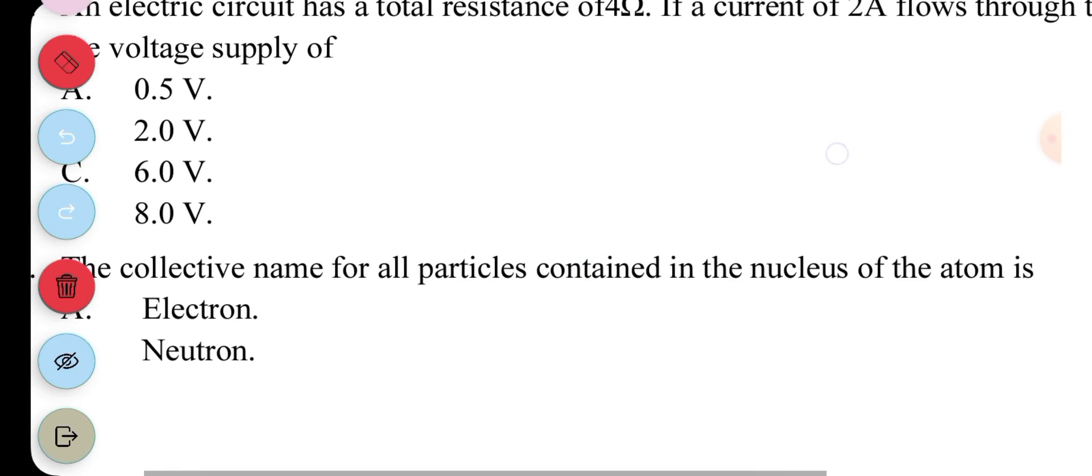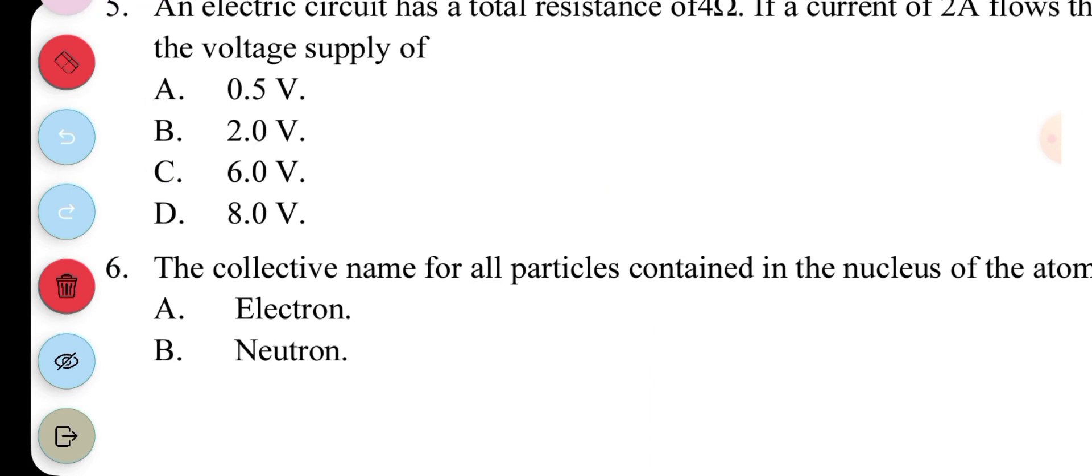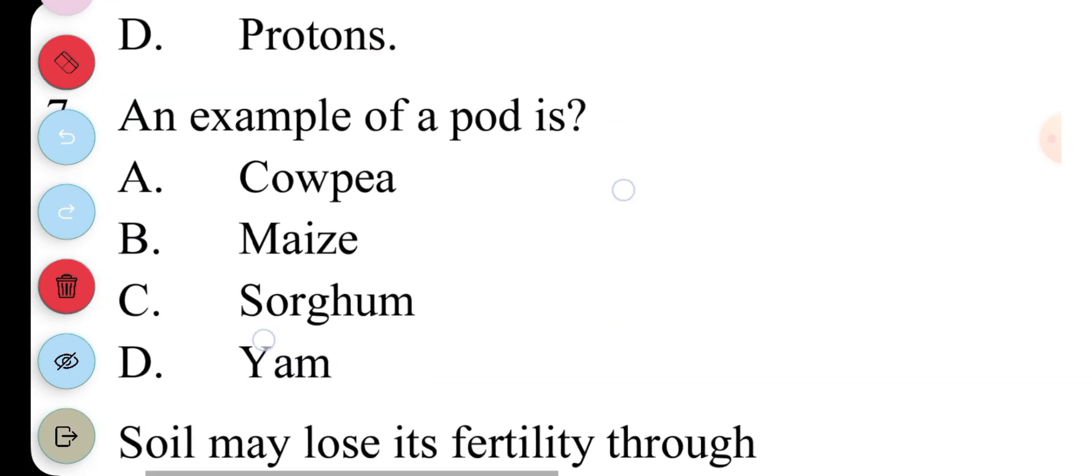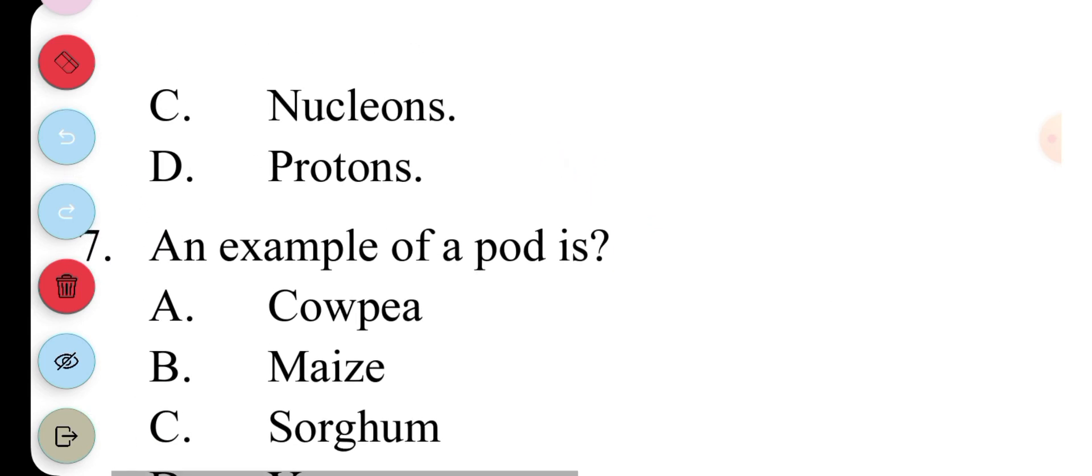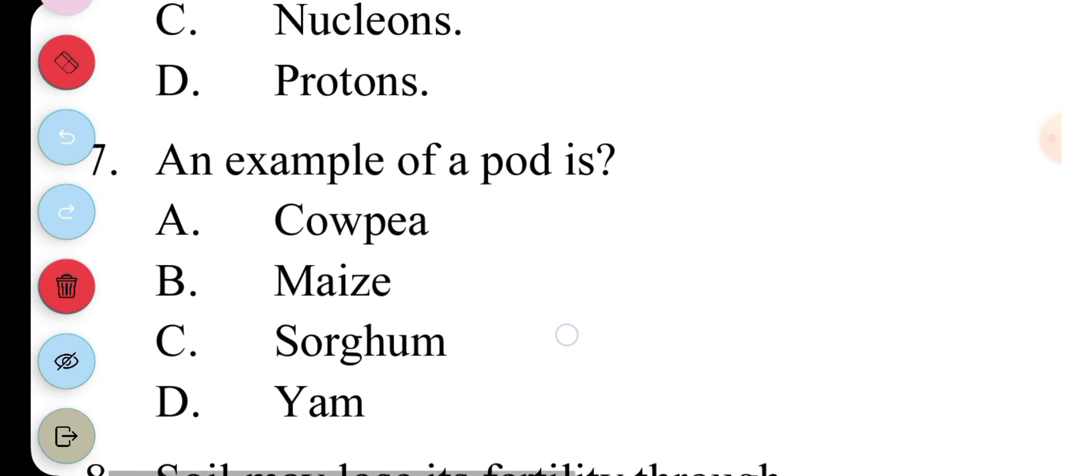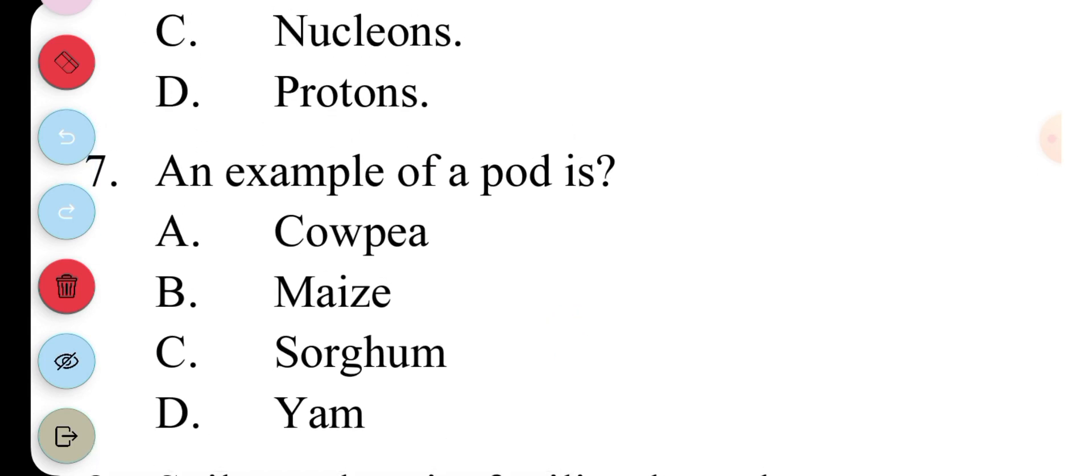Question six, the collective name for all particles contained in the nucleus of an atom is A electron, B neutron. The collective name for protons and neutrons is C. Question seven, an example of a pod is cowpea, maize, sorghum. And the answer is A, cowpea.